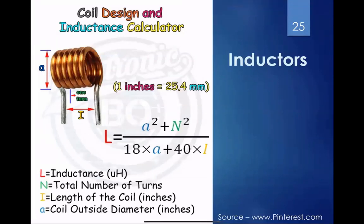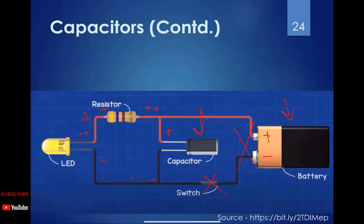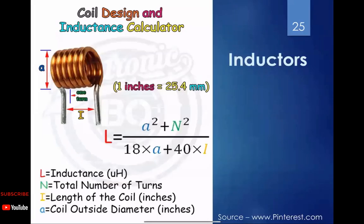Comparing a capacitor to a battery: capacitors release charge very fast, while batteries release charge slowly and last longer with higher energy capacity. Capacitors are useful in smaller circuits when you need brief backup power during an electrical supply outage.